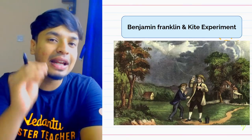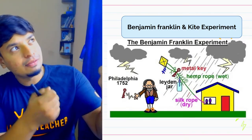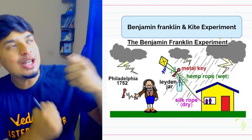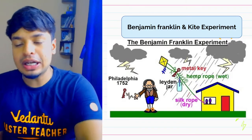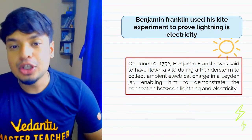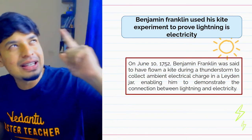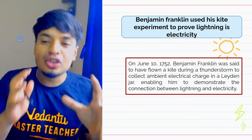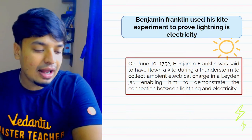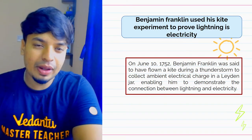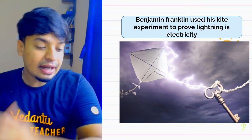Benjamin Franklin was the person who discovered that lightning is nothing but electricity. He actually flew a kite with a metal key attached to find out if lightning was really electricity or not. He went out during a thunderstorm and flew his kite to collect charges in a Leyden jar, enabling him to demonstrate the connection between lightning and electricity. He was incredibly brave to fly a kite during a lightning storm!